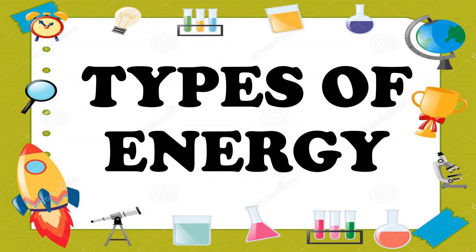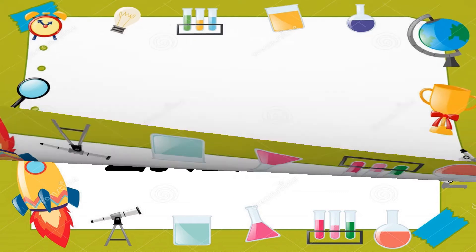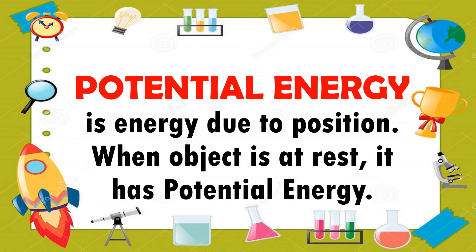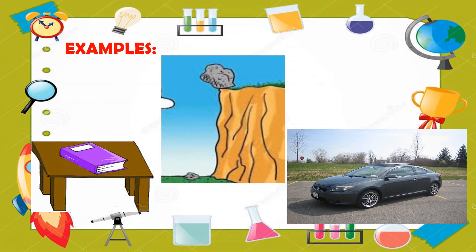What are the two types of energy? Potential energy. Potential energy is energy due to the position of an object. When an object is at rest, it has potential energy. Here are objects possessing potential energy: a book resting on a table, a rock hanging on a cliff, and a car parked in a parking lot.